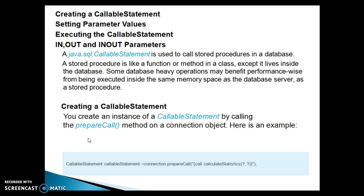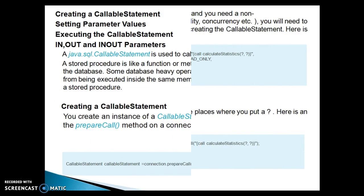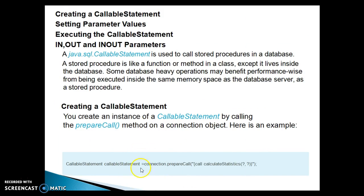You can create an instance of a callable statement by calling the prepareCall method on the connection object. Here is an example: if you have a connection object, you call prepareCall and pass the stored procedure using the CALL keyword, followed by the stored procedure name and input parameters as placeholders. These placeholder values you need to set by calling setter methods.